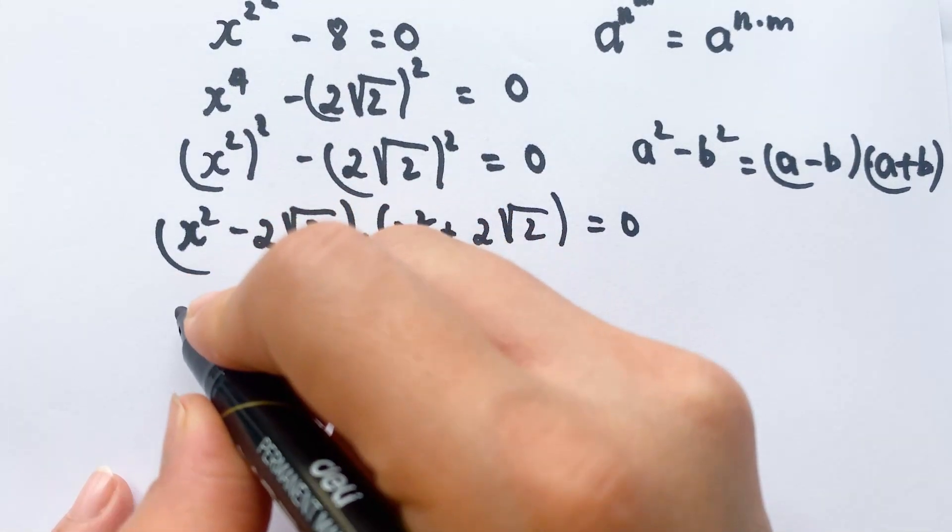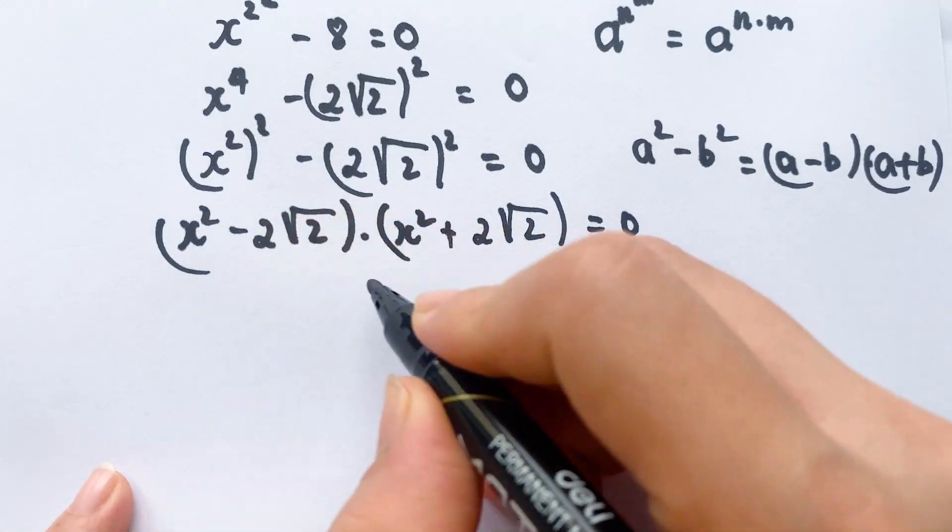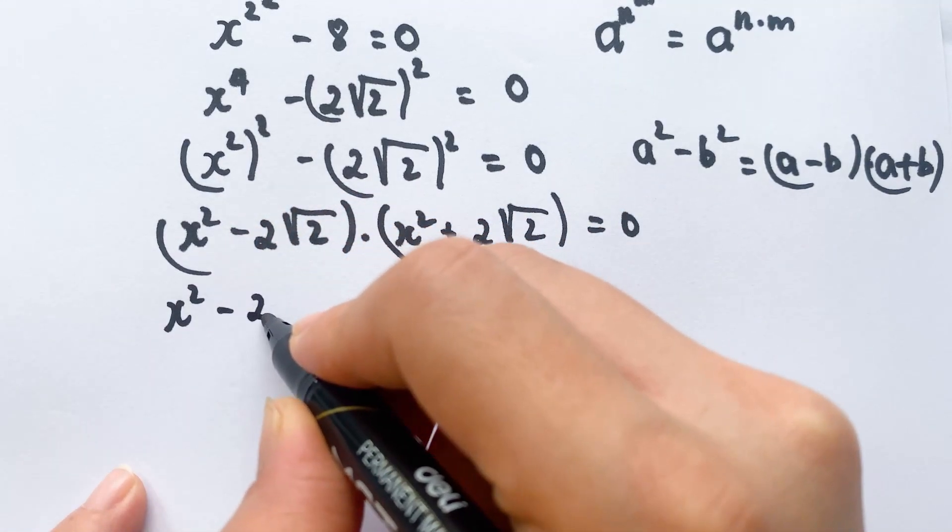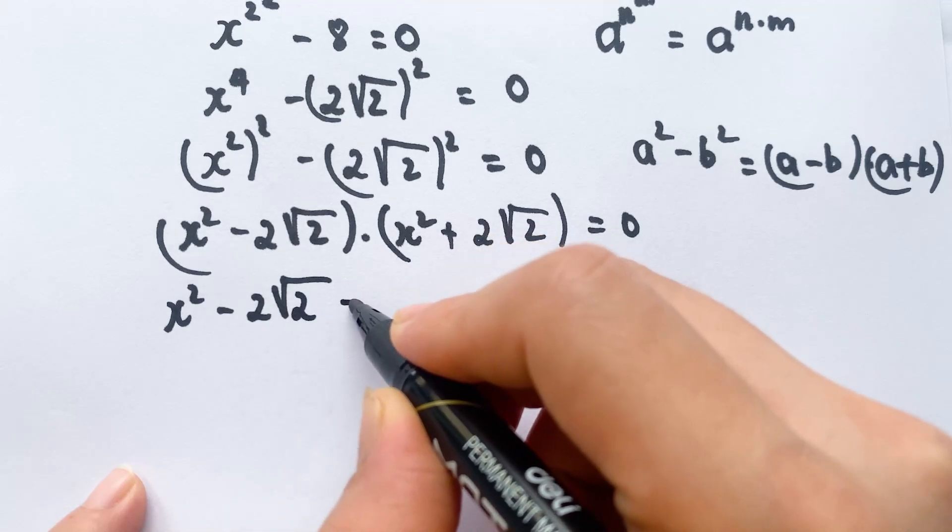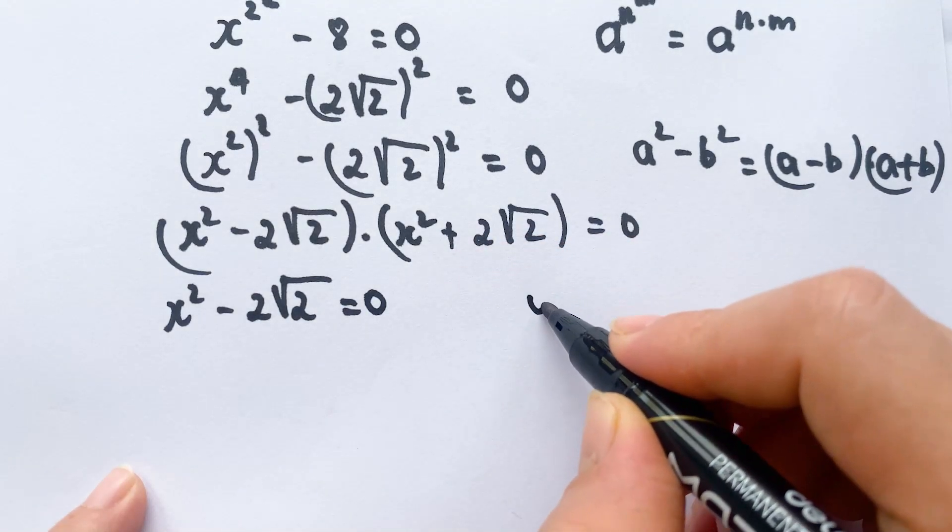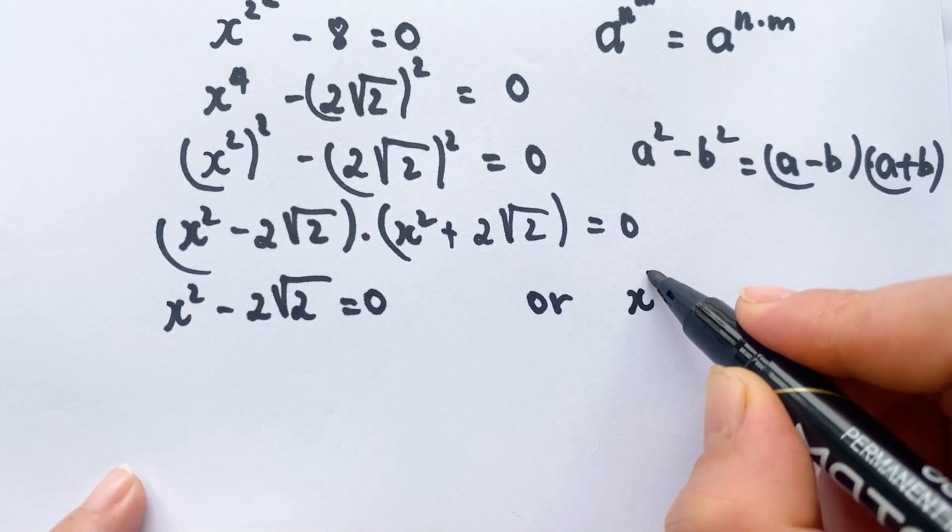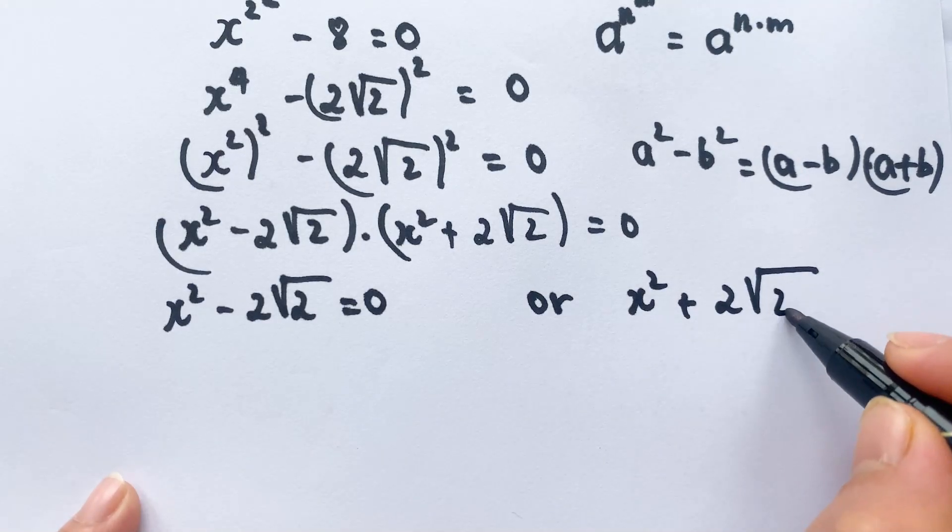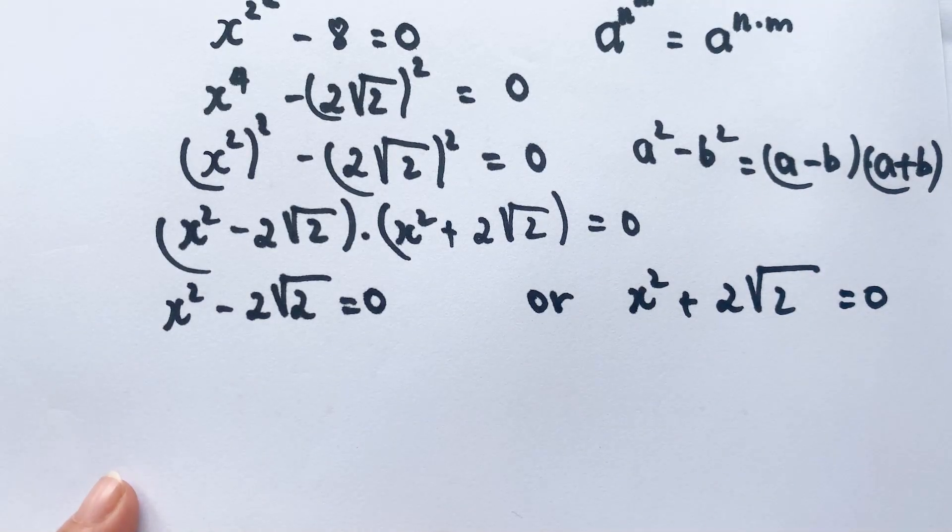We have two cases for that: x^2 - 2√2 = 0, or x^2 + 2√2 = 0.